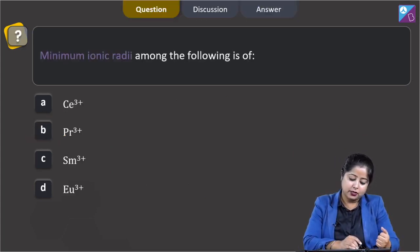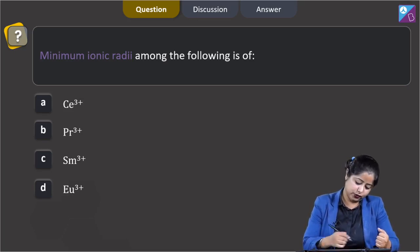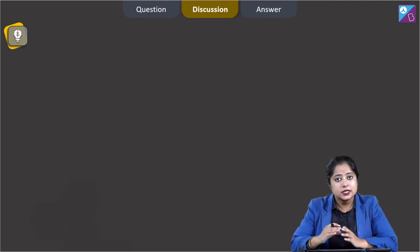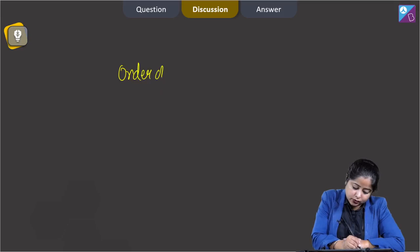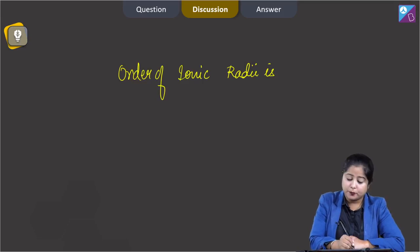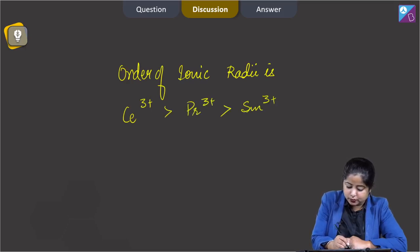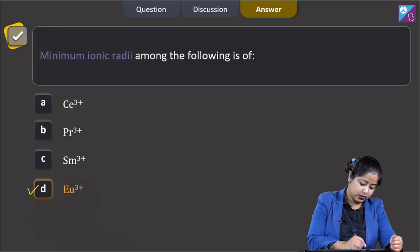The next question: minimum ionic radii among the following is of which ion? The options are Ce³⁺, Pr³⁺, Sm³⁺, and Eu³⁺. In the lanthanoid series, ionic radii decrease as atomic number increases. Therefore, the correct order is Ce³⁺ > Pr³⁺ > Sm³⁺ > Eu³⁺, meaning the least ionic radius is that of Eu³⁺. The correct answer is option D.